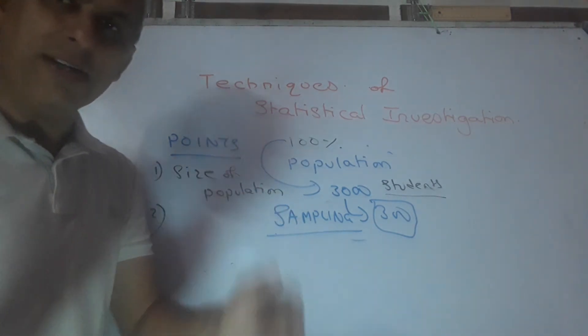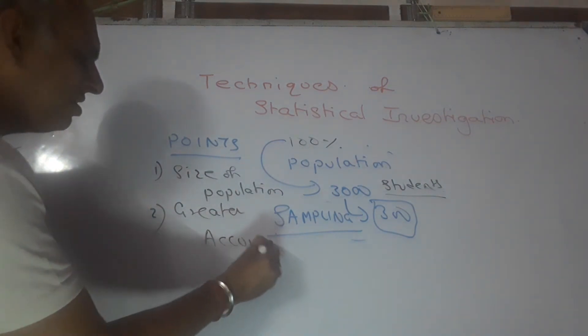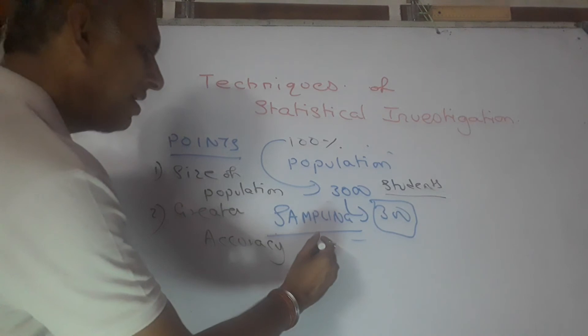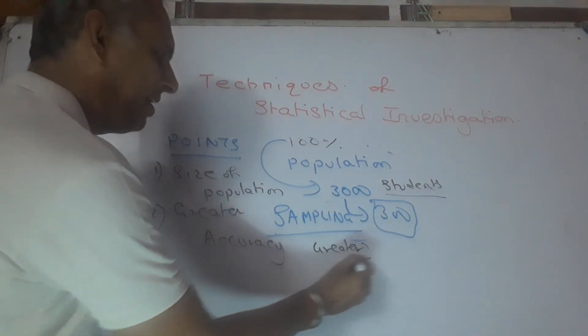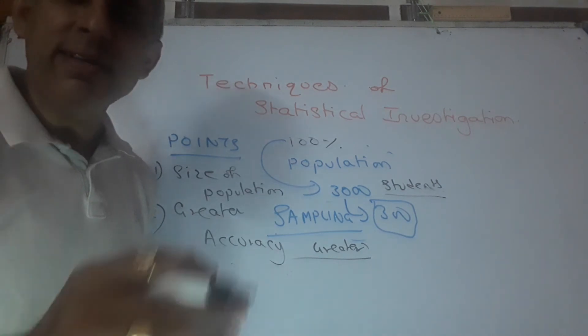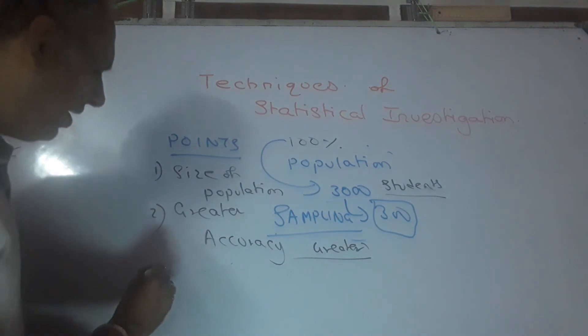So if greater accuracy is desired in the findings, then it is better that the sample size should be greater. Am I clear? Don't go by 300, go by 500. Am I clear? And the last point.